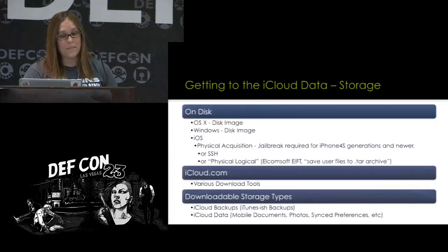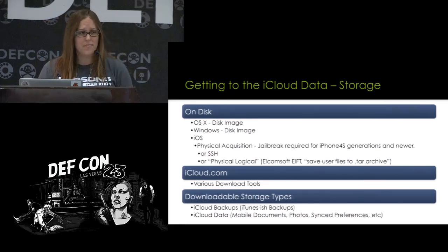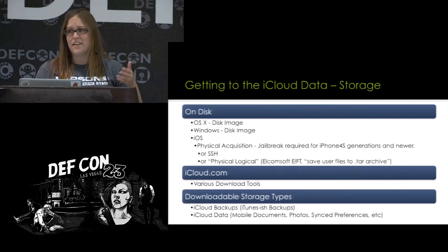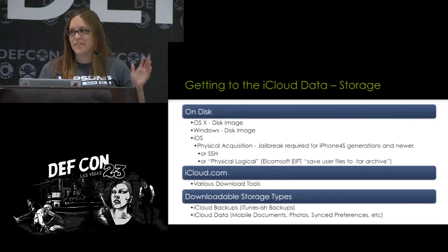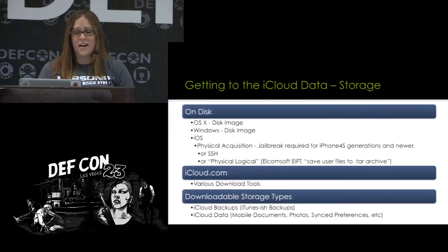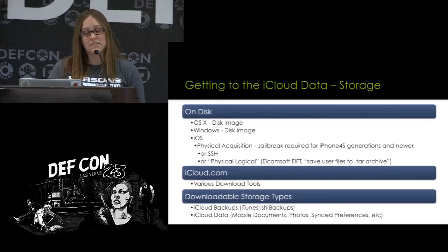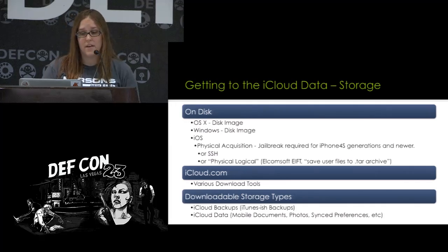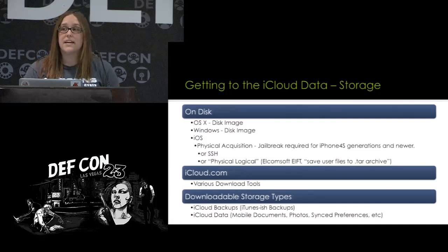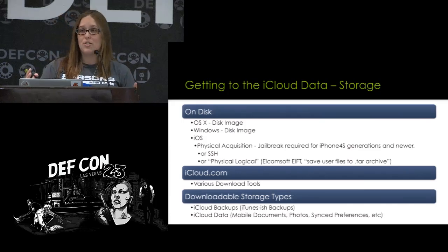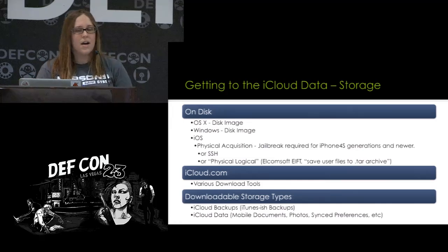Let's actually get to this iCloud data — on disk. Disk images for forensics are relatively easy to get using DD or NKs or whatever imaging tool you prefer. iOS is going to be the interesting one. We can do physical acquisition. 64-bit and data protection has really limited forensics, but it's not impossible. If there is a jailbreak out there, you can get this data. I do tend to like Alchemsoft EIFT — it's Russian software but highly used in the forensics community to do a physical-logical, which is a giant tarball of all the user-related files.